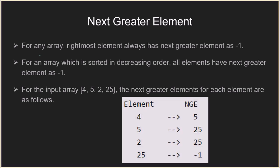So if you have this example with input array [4, 5, 2, 25], the next greater element for 4 is 5. Coming to 5, the next greater element cannot be 2, so it is 25 because 25 is greater than 5. The next greater element for 2 is also 25. Finally, for 25, as it is the last element of the array, there is no element towards its right.